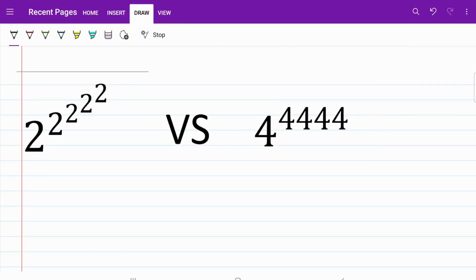On the left-hand side, I have number 2 raised to a series of laddered exponents. And on the right-hand side, I have 4 raised to the power of 4,444.